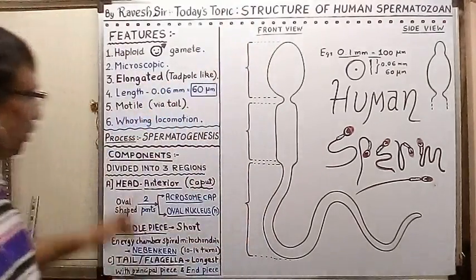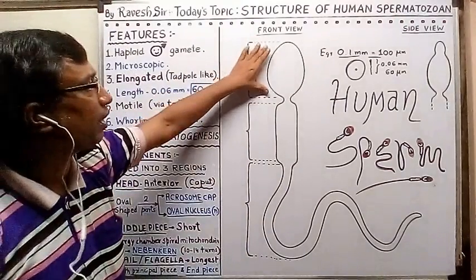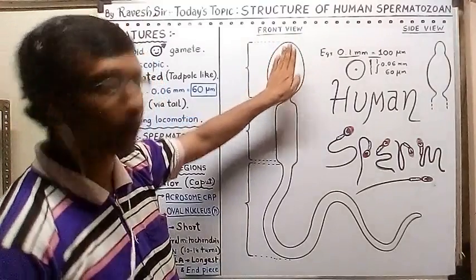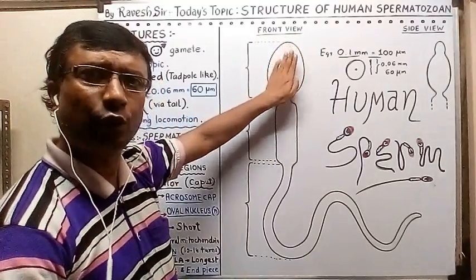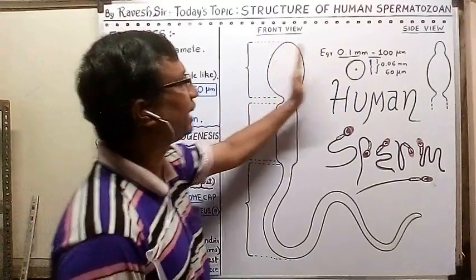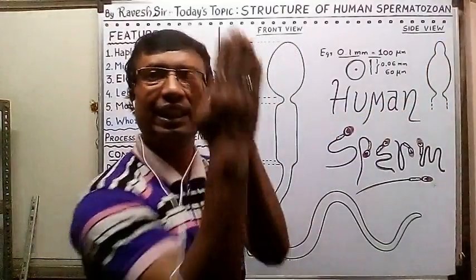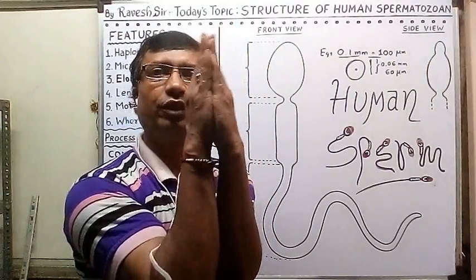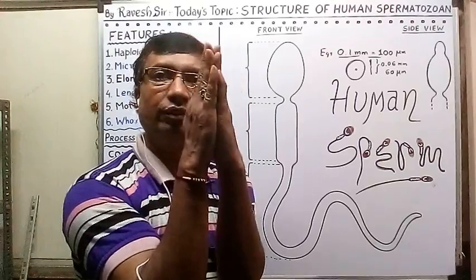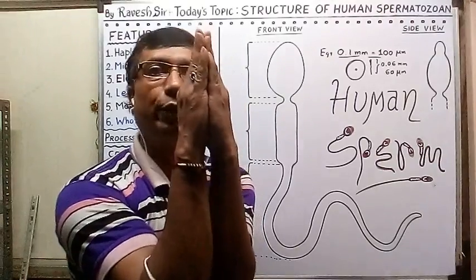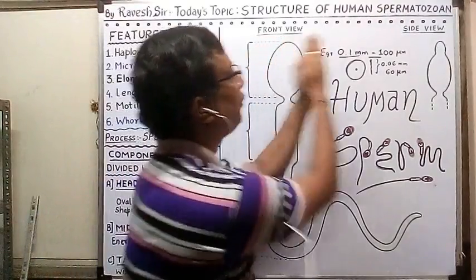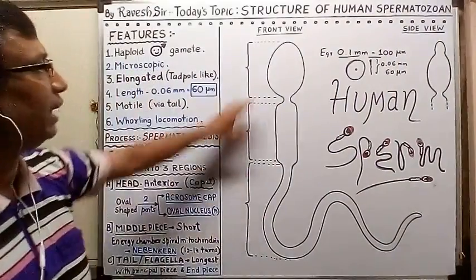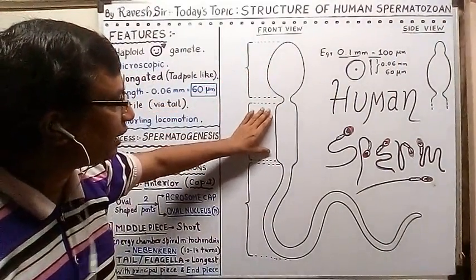The three regions are: the head, the middle piece, and the tail. The anterior part — the head — is roughly oval. In front view it appears perfectly oval, while in side view it appears narrow. Just like when you put two palms together — that gives the side view, and the flat face gives the front view.